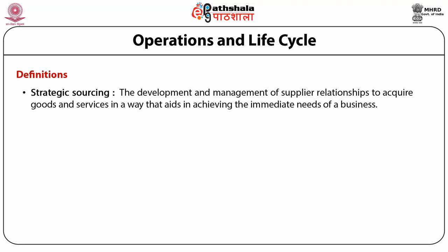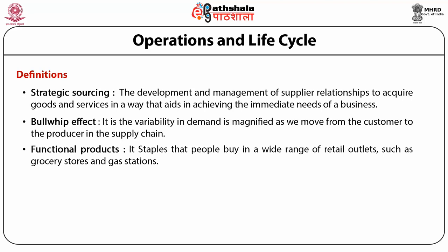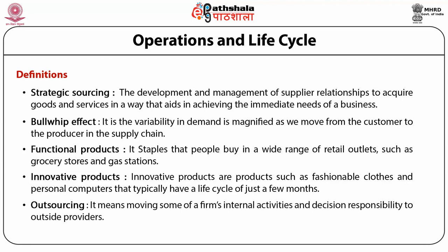Strategic sourcing is the development and management of supplier relationships for the acquisition of goods and services in a way that aids achieving the immediate needs of a business. The bullwhip effect can be defined as variability in demand as we move from customer to producer in the supply chain. Functional products are staples that people buy in a wide range of retail outlets such as grocery stores and gas stations — they do not involve much innovation. Innovative products are fashionable products, apparel, fashionable clothes, and personal computers that typically have a life cycle of just a few months. Outsourcing means moving some of the firm's internal activities and decision responsibilities to outside providers.